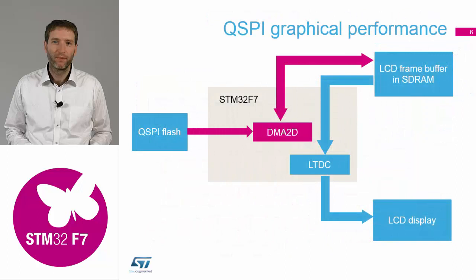If we extract just the elements used for driving graphics, we have the LTDC controller and the DMA2D. The LTDC controller is responsible for updating the LCD display at the nominal refresh rate, which is usually 60 Hz. It takes the data stored in the framebuffer and uses this data to update the display at that refresh speed.